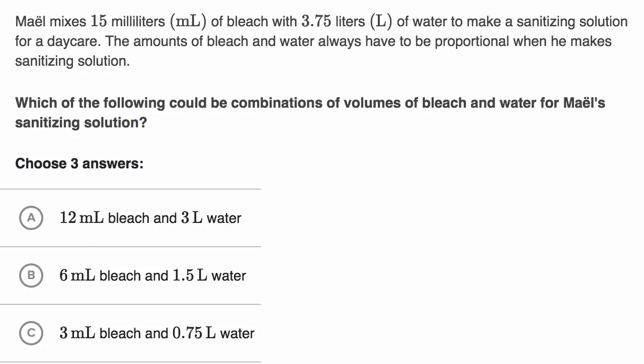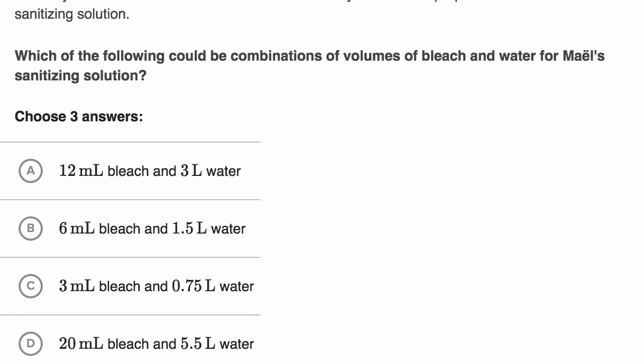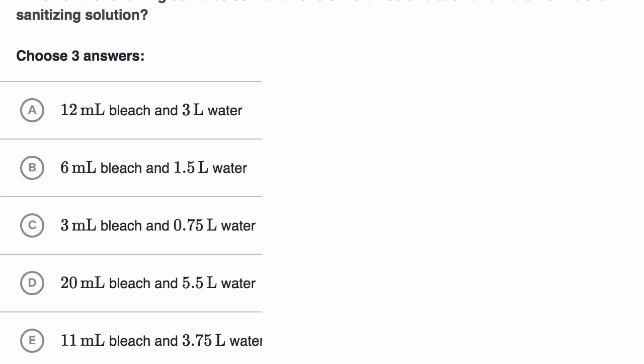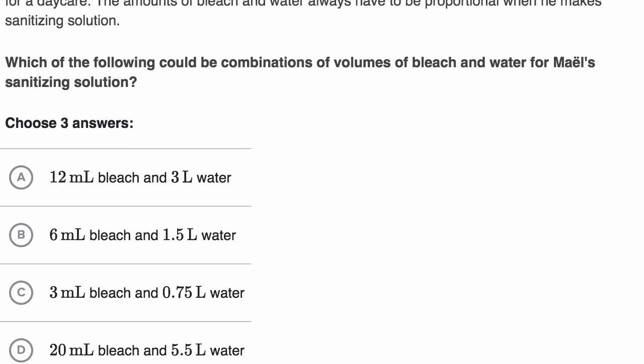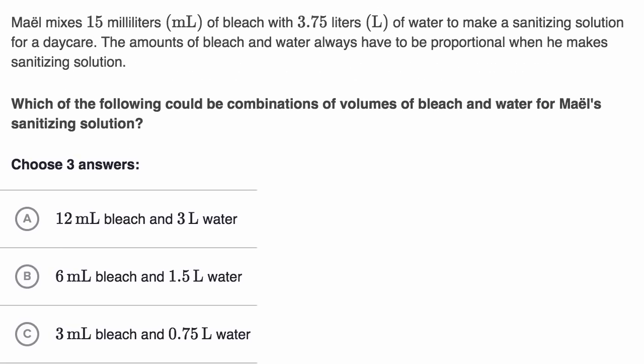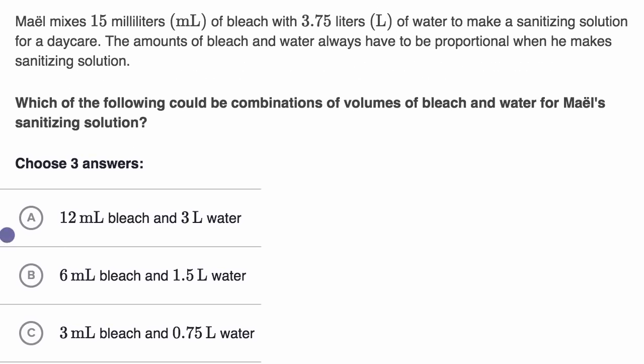And they give us, actually they give us five potential combinations, they say pick three. So I encourage you to pause this video and try to figure it out. Remember, he mixes 15 milliliters of bleach for every 3.75 liters of water. All right, now let's try to work this together.